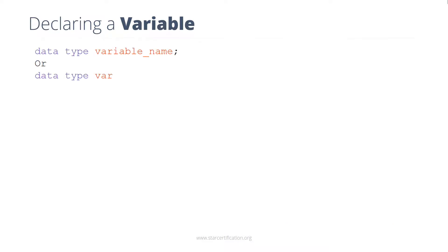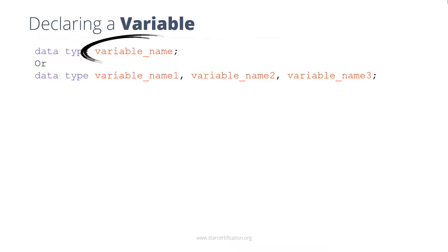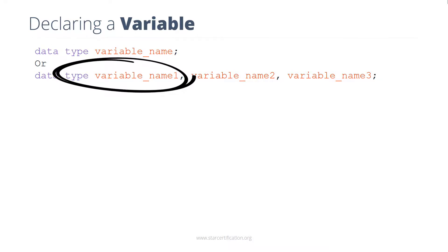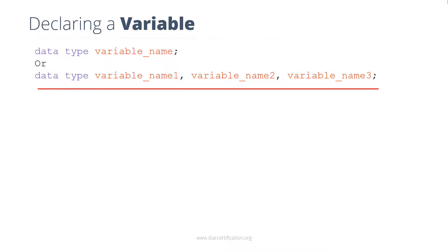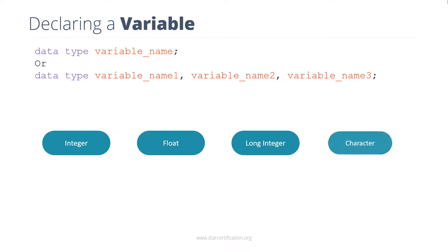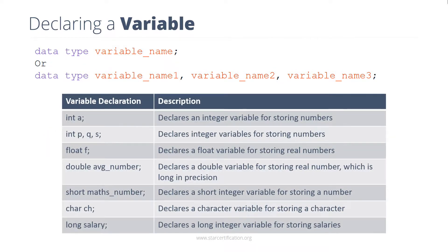A variable can store any value including numeric or string. Once you name a variable in your program, you need to specify the type of values it will take during execution. Any variable used in the program must be declared before using it. The syntax for declaring a variable is shown on the screen. You need to use a specified format for declaring variables like integer, float, long integer or character. Some examples for declaring different types of variables are shown on the screen.